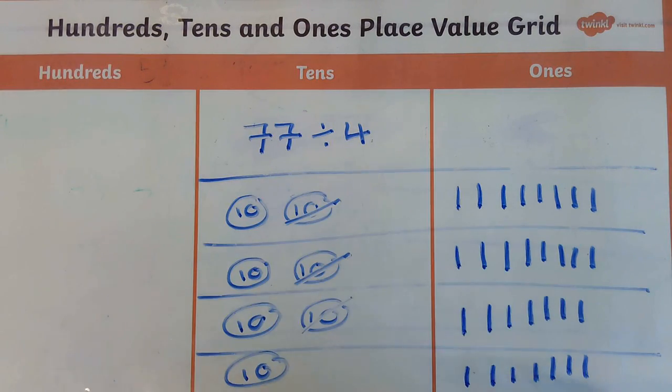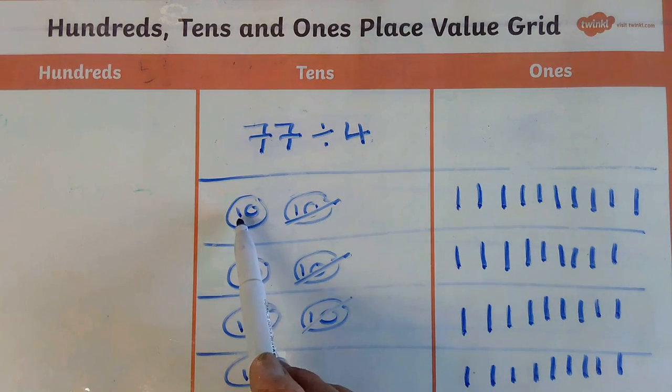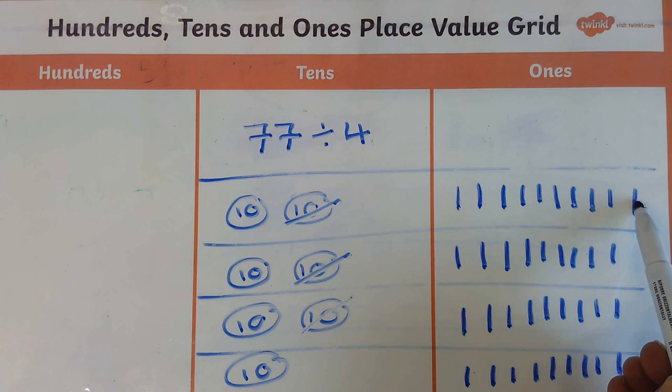Now I've still got 7 ones. We're going to add the 7 ones in: 1, 2, 3, 4, 5, 6, 7. You can see in the first column, first row rather, I've got 10, 11, 12, 13, 14, 15, 16, 17, 18, 19, 20. Okay.